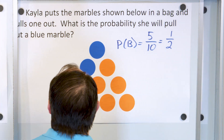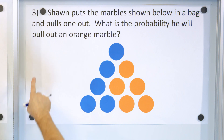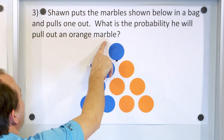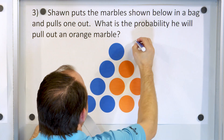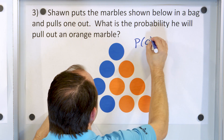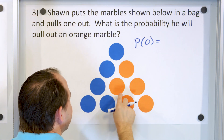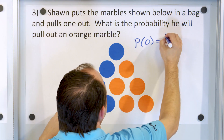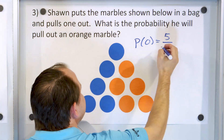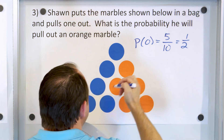Let's compare that to the other situation where we do the same exact thing. What is the probability we'll pull out an orange marble? The probability of an orange marble is again five possible outcomes out of a total of ten, which again works out to one-half.